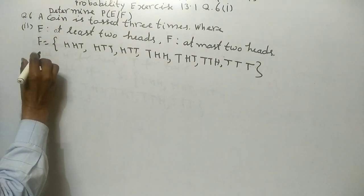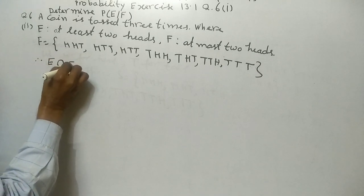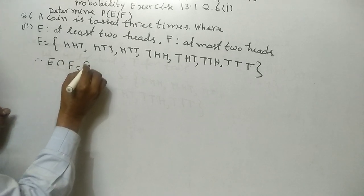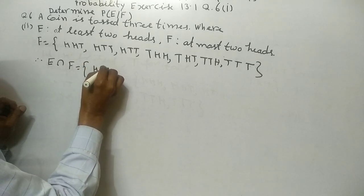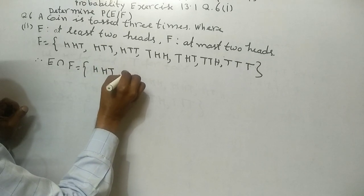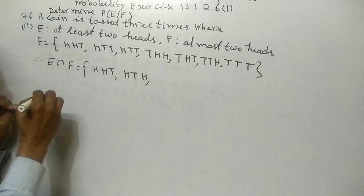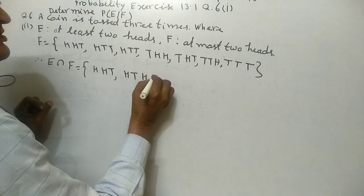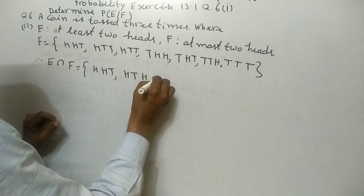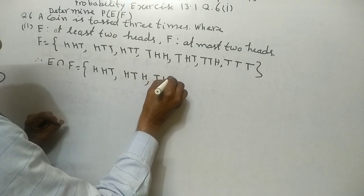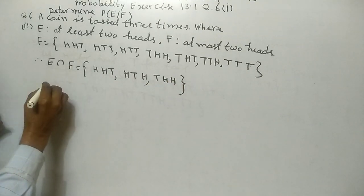Therefore, E intersection F equals HHT, HTH, THH.